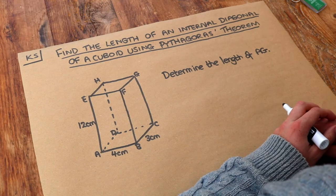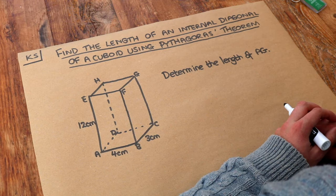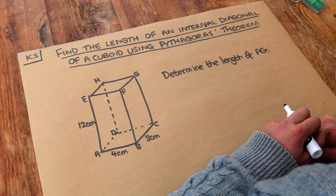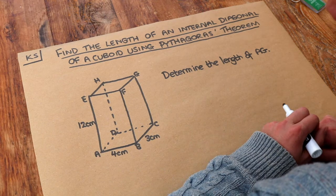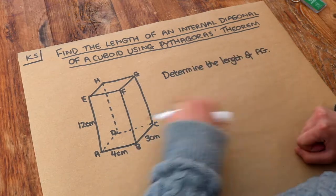Hello and welcome to Dr Ross Mass's key skill video on finding the length of an internal diagonal of a cuboid using Pythagoras theorem. This is sometimes known as 3D Pythagoras because we're using Pythagoras theorem which usually applies to 2D shapes, right angle triangles, in a 3D setting.